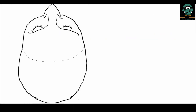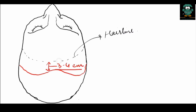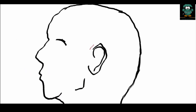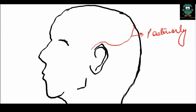The incision is placed at least three to four centimeters behind the hairline on the vertex of the head. In male patients, because of male pattern baldness, the incision can be placed in the posterior region as well, so in male patients the incision is placed posteriorly.